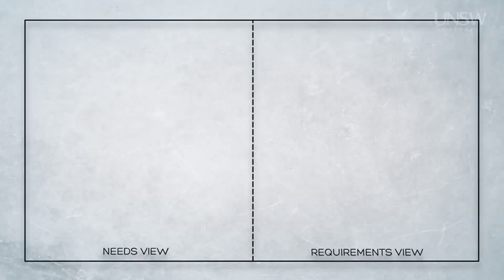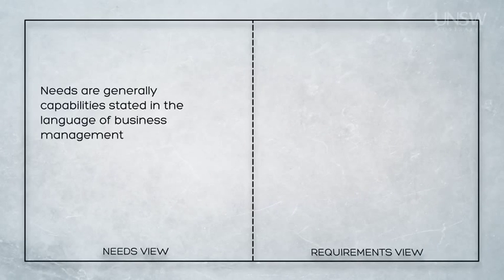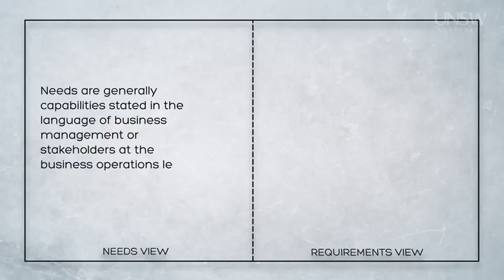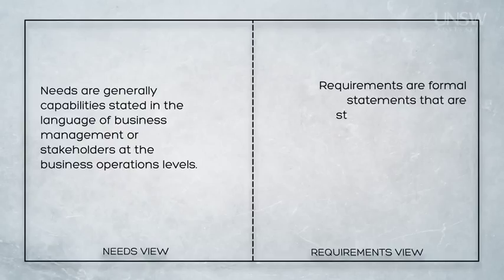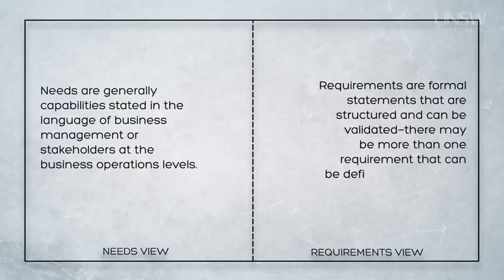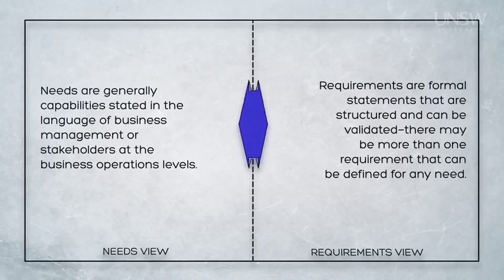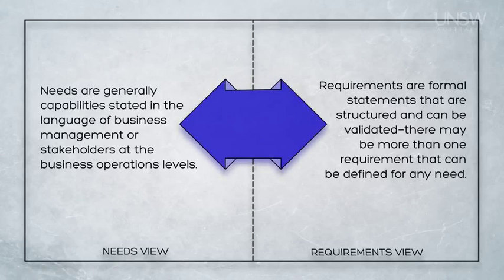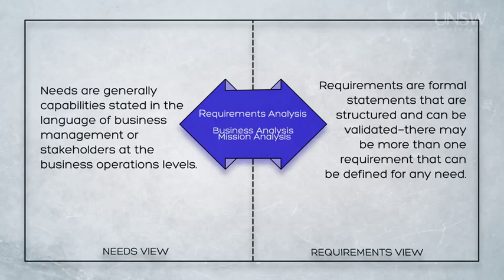When describing the system, we need to make the distinction between needs and requirements. Needs are generally capabilities stated in the language of business management or stakeholders at the business operations levels. Requirements are formal statements that are structured and can be validated. There may be more than one requirement that can be defined for any need. Requirements are generated from needs through a process of requirements analysis, which is also called business analysis or mission analysis, at the higher levels.